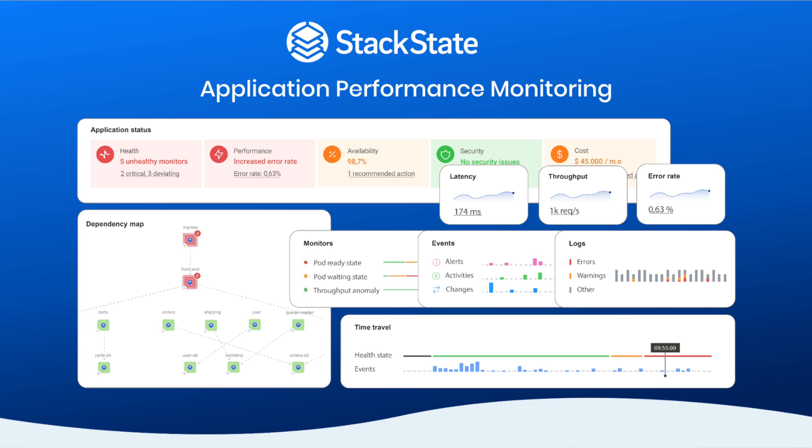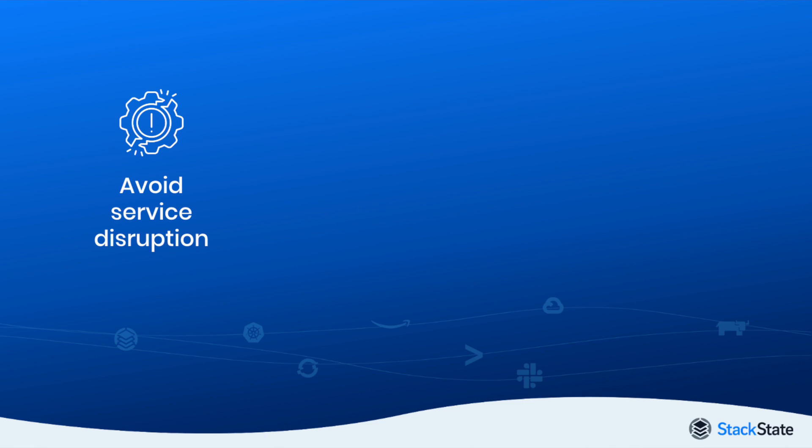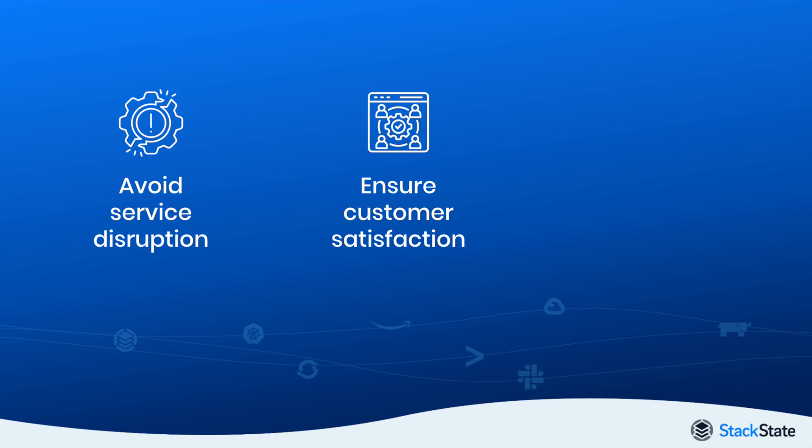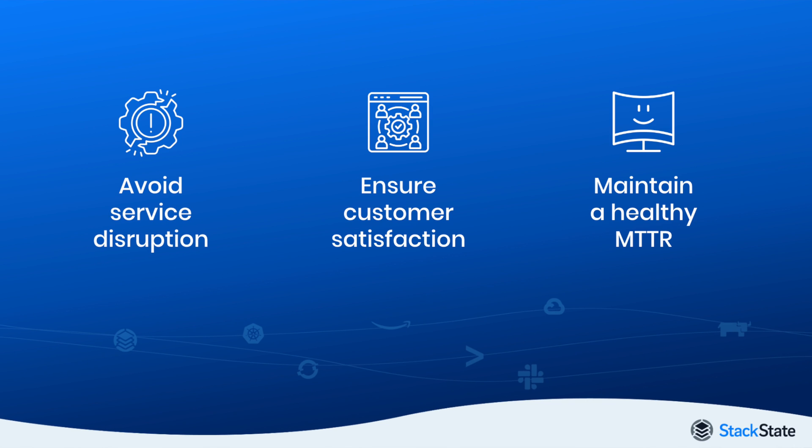In today's video, we go much deeper into the topic of application performance monitoring, why it's necessary and why our solution drives better results. Application performance monitoring, or APM for short, is all about maintaining desired levels of service. APM tools enable businesses to detect issues within their application to avoid service disruption, keep and ensure customer satisfaction, and maintain a healthy level of mean time to repair to quickly solve any issue that arises in their landscape. By observing a lot of application and environment data, these business needs can be achieved.